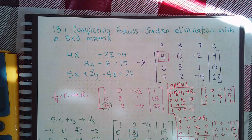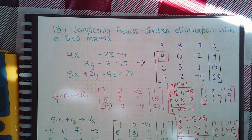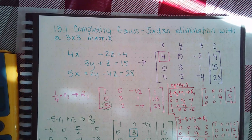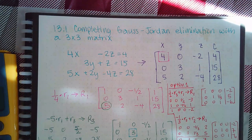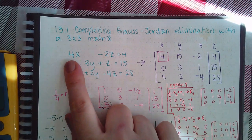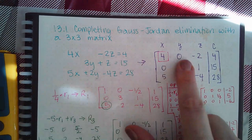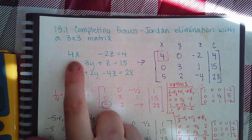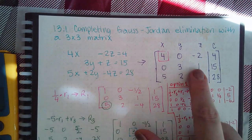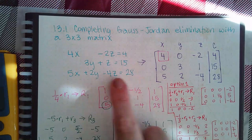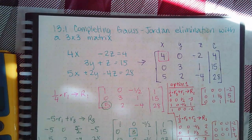Here we have 13.1, completing the Gauss-Jordan elimination with a three-by-three matrix. I did previously record it but it messed up, so I'm going to go over it again with what is already written down. The first thing is to create the augmented matrix, which I've done here — no coefficient for x, no coefficient for y, negative two for z, and four for the constant; no coefficient for x, three, positive one, positive 15; five, two, negative four, and twenty-eight.